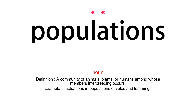Noun. Definition: A community of animals, plants, or humans among whose members interbreeding occurs. Example: Fluctuations in populations of voles and lemmings.